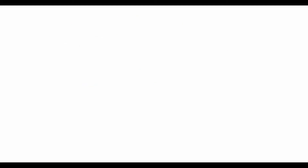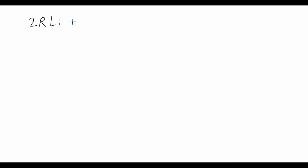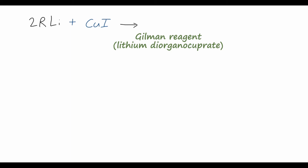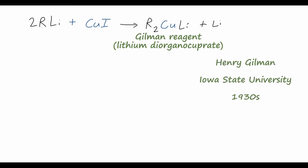So what is the mechanism? We start with our two equivalents of RLi, and treating this with copper(I) iodide gives us a transmetallation reaction where we end up with what is called a Gilman reagent — R₂CuLi. We also get lithium iodide as a byproduct. The Gilman reagent is named after Henry Gilman at Iowa State University, actually several decades before the Corey-House synthesis was discovered, back in the 1930s.